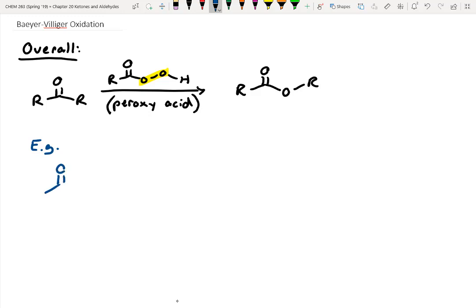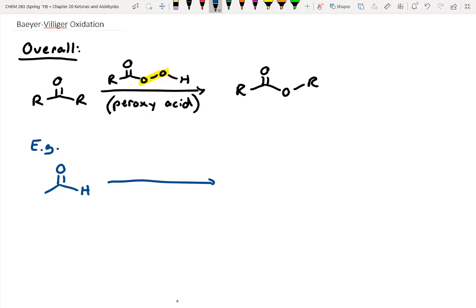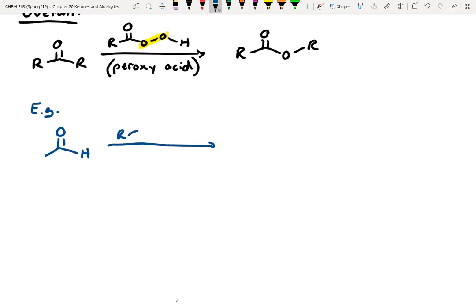So let's say we have this aldehyde, acetaldehyde, and we treat this with a peroxy acid. What happens is the oxygen will insert in between this carbon-hydrogen bond, and you can actually directly oxidize an aldehyde all the way to a carboxylic acid. You could also go from that aldehyde to the carboxylic acid using chromic acid. Why might we use this instead of chromic acid? It doesn't have chromium, which will give you cancer, right? So it's a pretty good alternative.